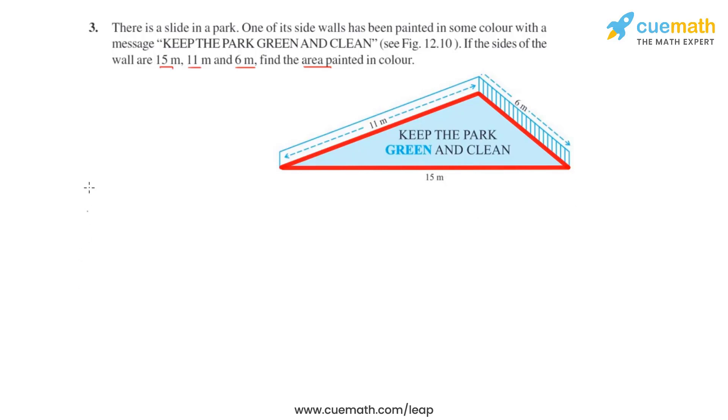We may start by first finding its perimeter which is found by adding up all the sides. So we add 11 meters plus 6 meters plus 15 meters. We can write 2s where s is the semi-perimeter to be equal to 32 meters. From this we can calculate the semi-perimeter s of this given triangular wall to be equal to 16 meters.